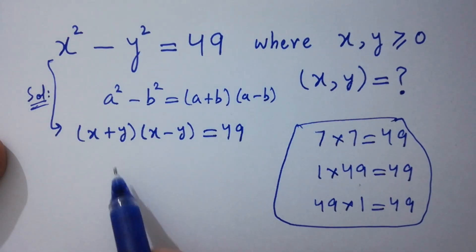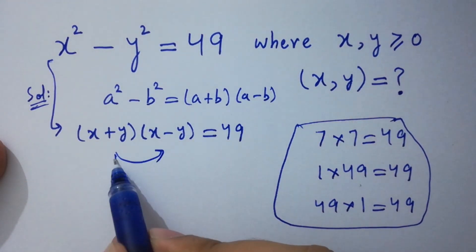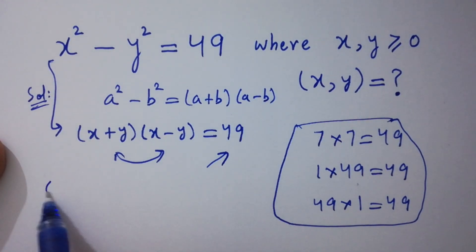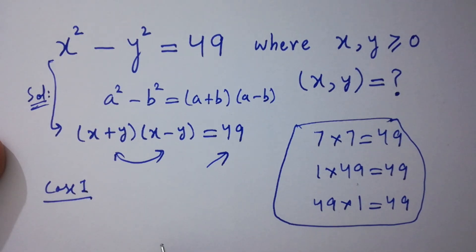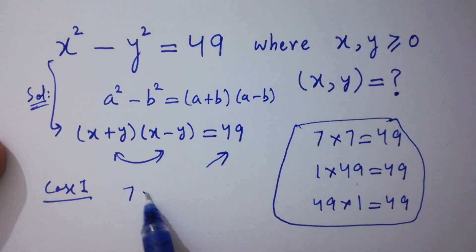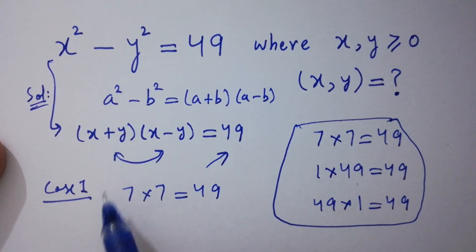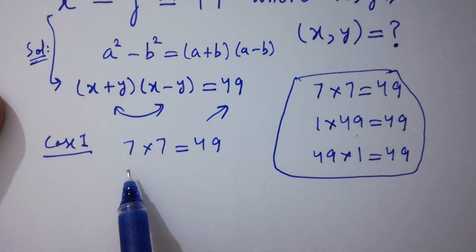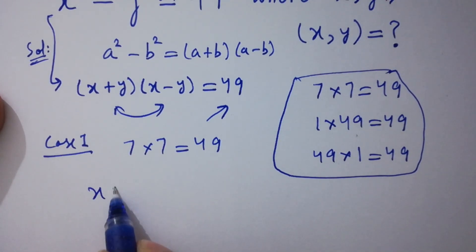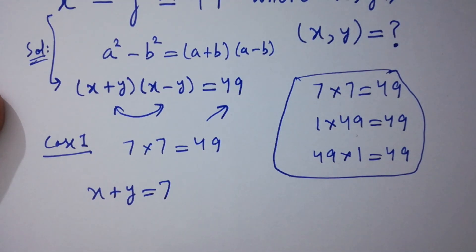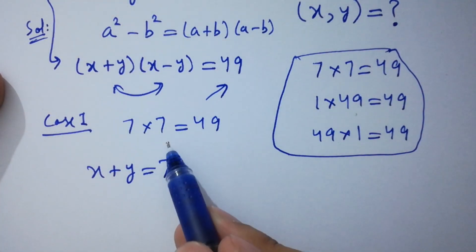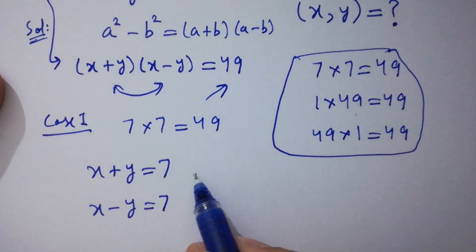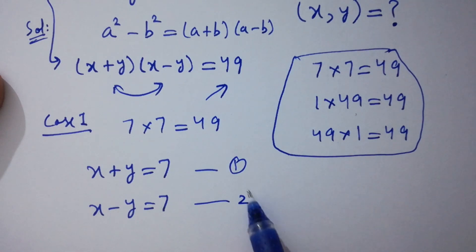By this we get 49. Taking the first case, which is 7 times 7 equal to 49, by comparing we have x plus y equal to 7 as the first equation, and x minus y equal to 7 as the second equation.